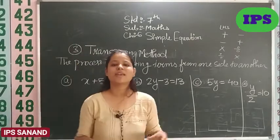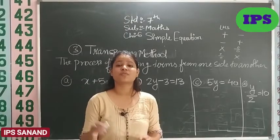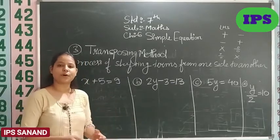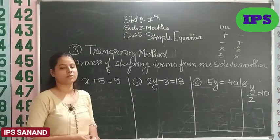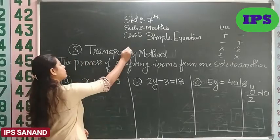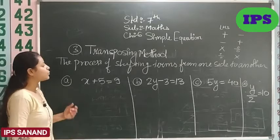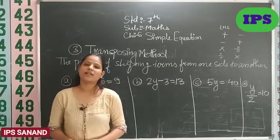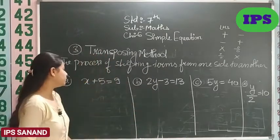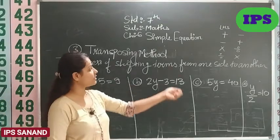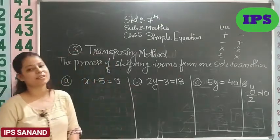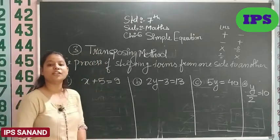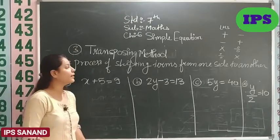Okay students, now we have reached the last section of the video, which is very, very important. This method is very useful for finding the values of variable, for solving the equations. This method is called transposing method. What is the definition of this method? The process of shifting terms from one side to another is called transposing method. When we take terms from RHS to LHS side, or take LHS to RHS side, the way we shift them and get values, is called transposing method.